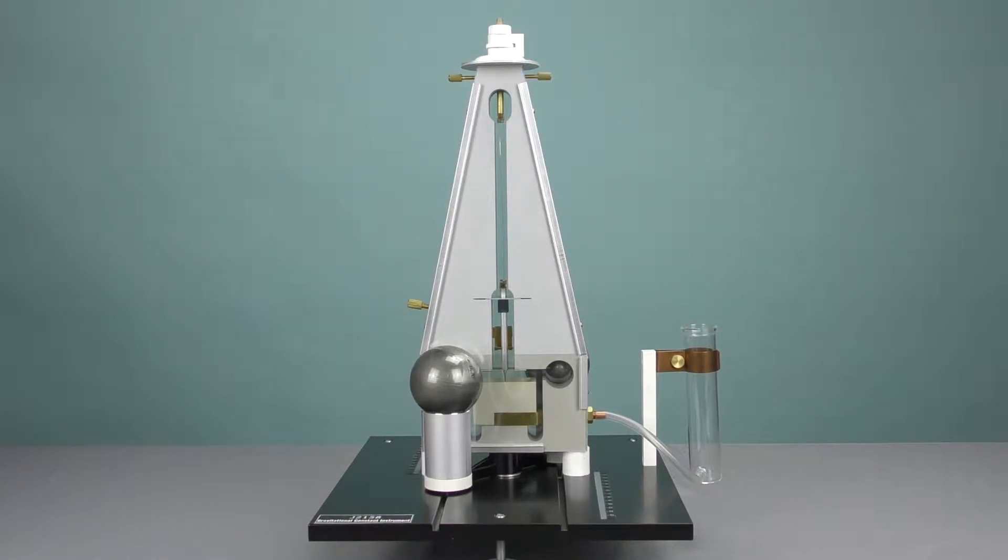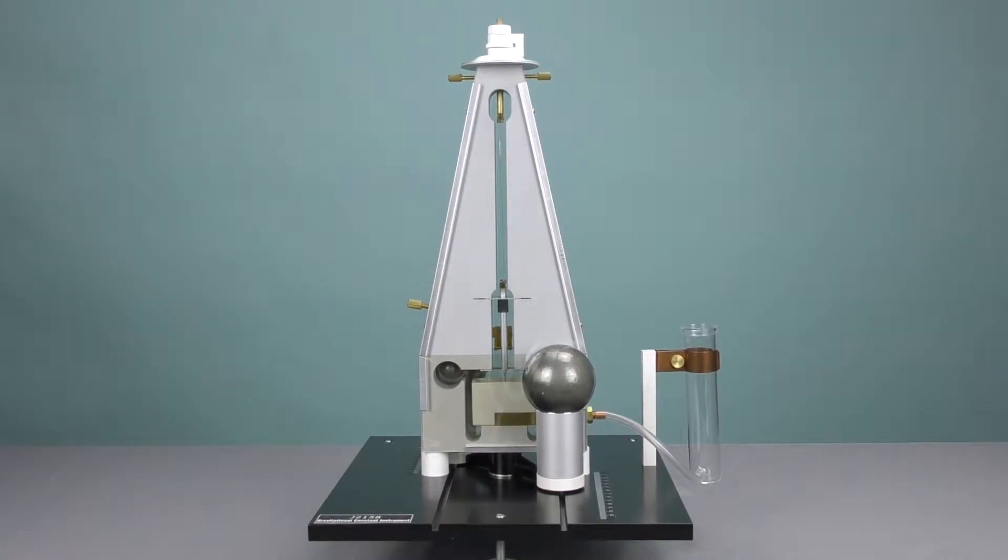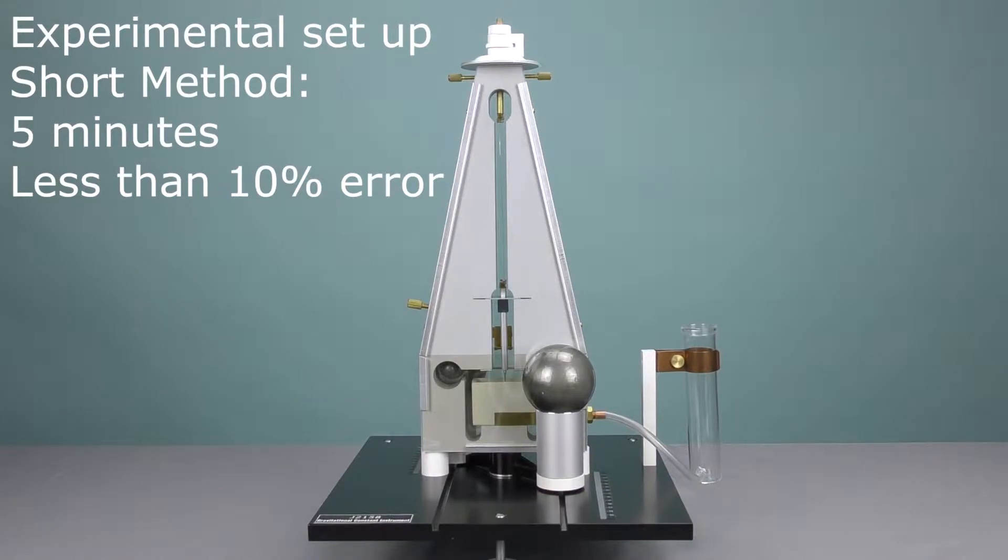With these, you can logically determine the gravitational constant. If this process is too long, there actually is a shorter way to do it, but you will not get the two percent error.